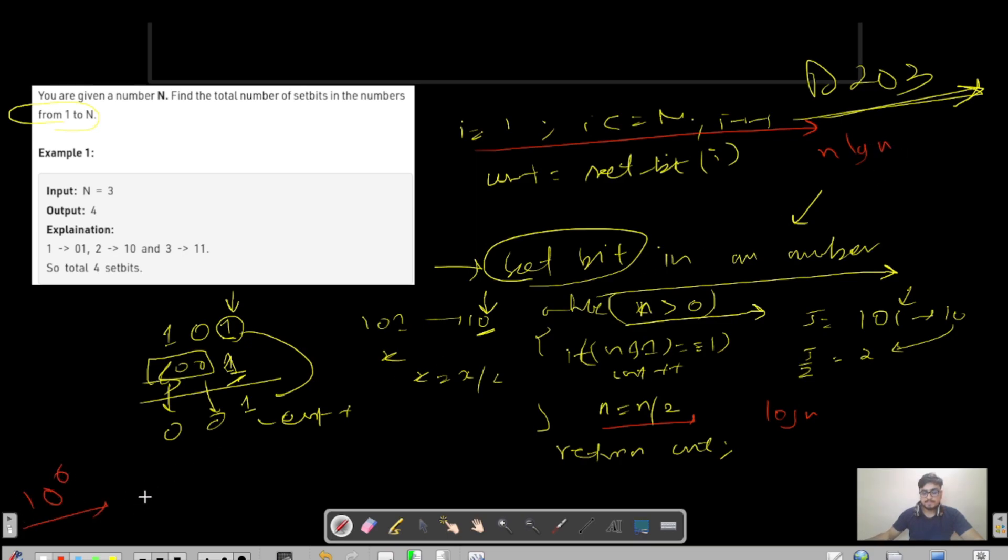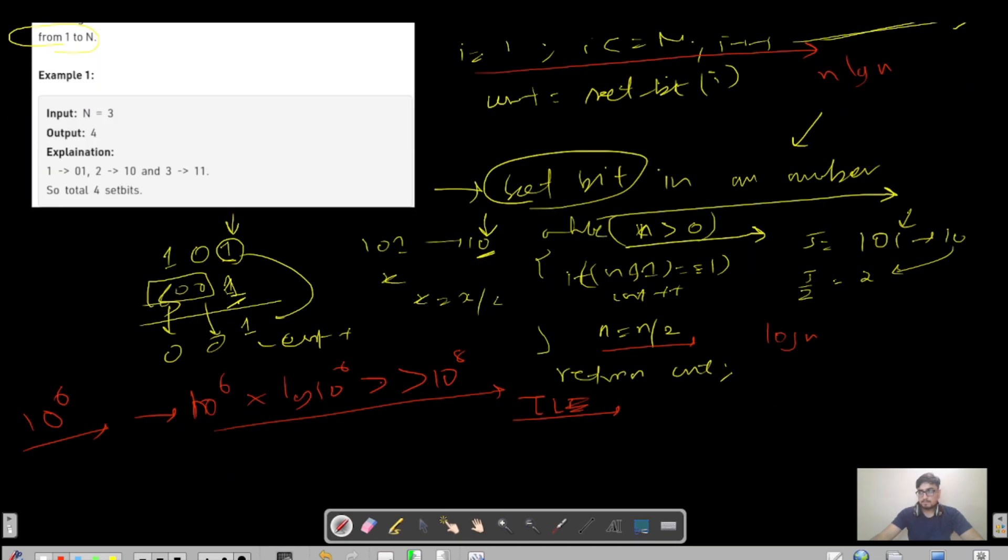The question asks for the sum of set bits from 1 to n. For 1 to n we will run the same program for each i from 1 to n. We run this set bit function for each i. The time complexity is clearly O(n log n) because the function is log n and we iterate n times. With the constraint of 10 power 6, this will definitely exceed 10 power 8 and hit time limit exceeded. Let us verify this approach by coding it first.